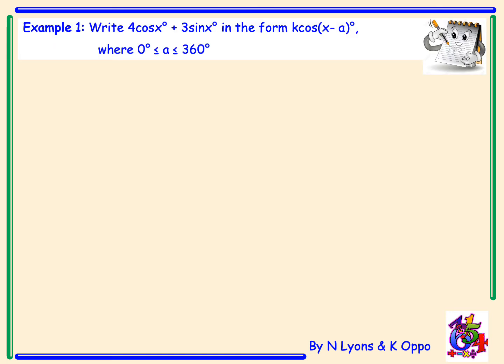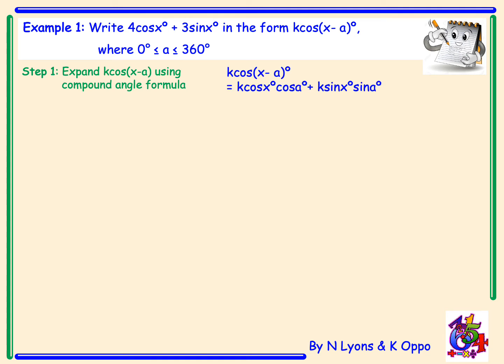Example 1: Write 4 cos x plus 3 sin x in the form k cos of x minus a, where a lies between 0 and 360 degrees. We first need to expand k cos of x minus a using our compound angle formula, which expands to give k cos x cos a plus, note the change of sign, k sin x sin a.